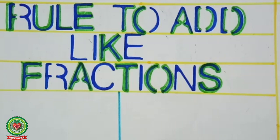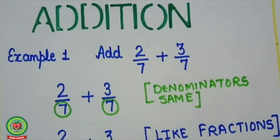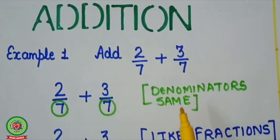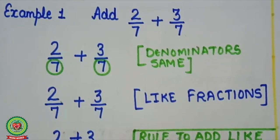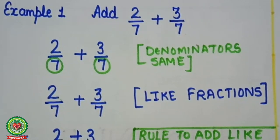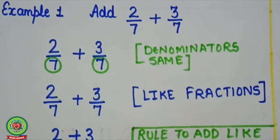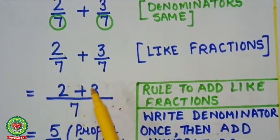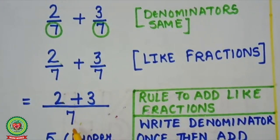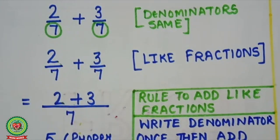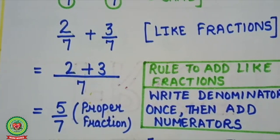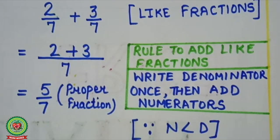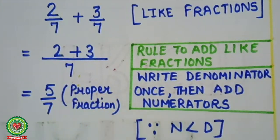Let's understand with examples. Here, we have to add 2 upon 7 and 3 upon 7. As you can see, denominators are the same, so same denominator indicates these are like fractions. According to the rule, we will write the denominator once and add the numerators. We will write 7 once only, and numerators are 2 plus 3. So 2 plus 3 equals 5, giving us 5 upon 7. Here you can see the numerator is less than the denominator, therefore this is a proper fraction.